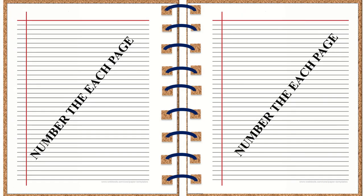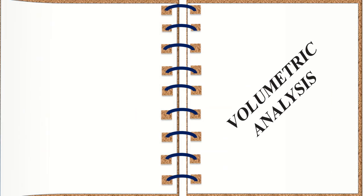Let's start with the first point: numbering each page. Whenever you get the journal, you should write the page number first on each page. Now let's look at the first practical — the first experiment, which is volumetric analysis.